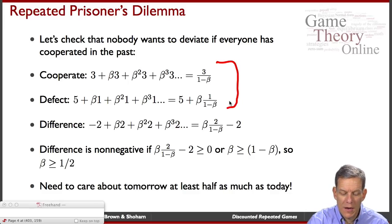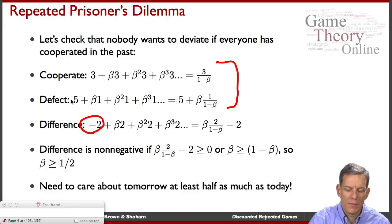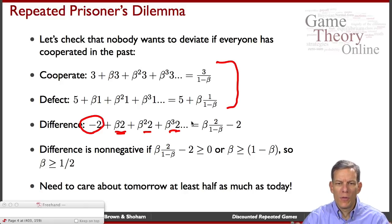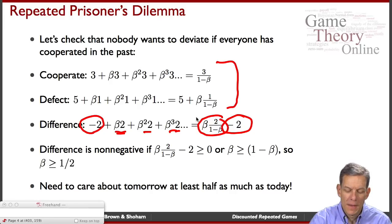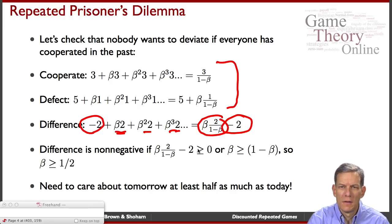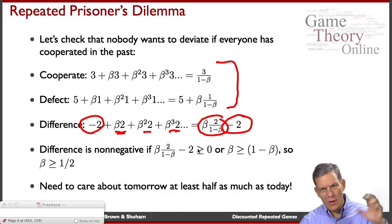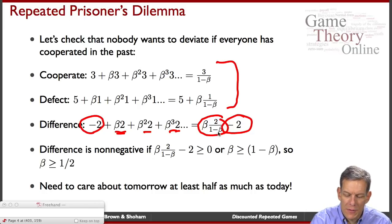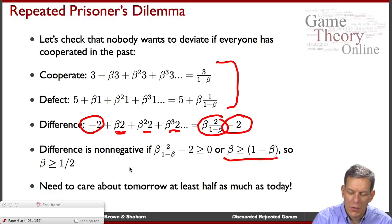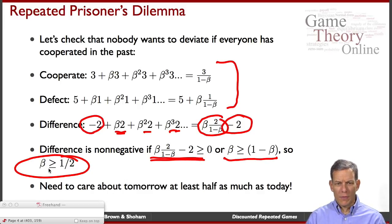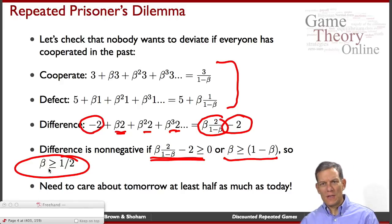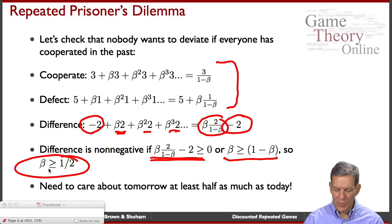We can look at the difference between these two payoffs. If I stay cooperating instead of defecting, I'm giving up 2 today, but I keep the benefits of cooperation in the future — getting extra 2s in perpetuity. The value of staying cooperative is beta times 2 over (1 minus beta) minus the 2 I forego today. I want to cooperate as long as this is non-negative, which gives us beta greater than or equal to one half. So as long as people care about tomorrow at least half as much as today, they'll cooperate in this repeated prisoner's dilemma.